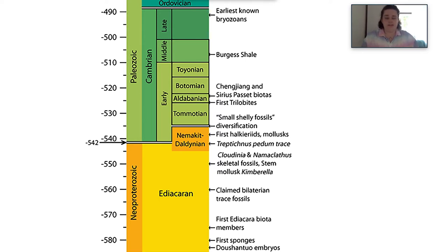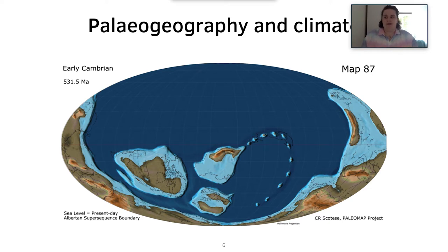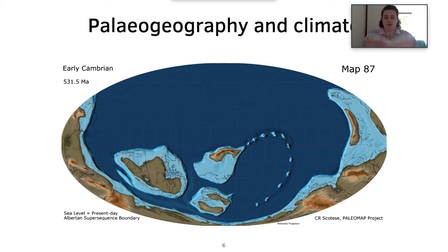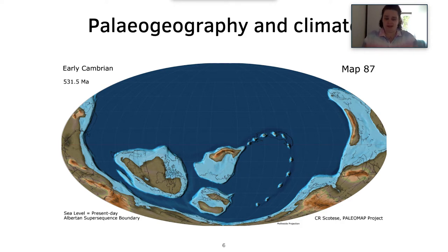The Burgess Shale is quite an important locality we will be discussing in this lecture. During the Cambrian there was a supercontinent known as Pannotia which began to break up due to the Iapetus Ocean forming. The supercontinent was breaking up with this ocean forming between continents known as Laurentia, Siberia, Baltica, and Gondwana. The overall paleoclimate was cool and quite cold with a gradual warming event towards the end of the Cambrian. Gondwana covered the South Pole, which changed the way polar currents moved around, bringing nutrients to different areas.